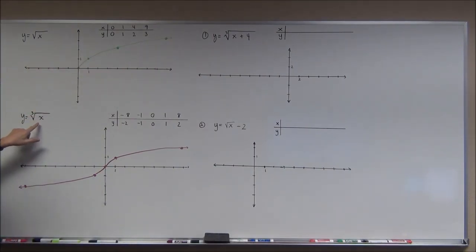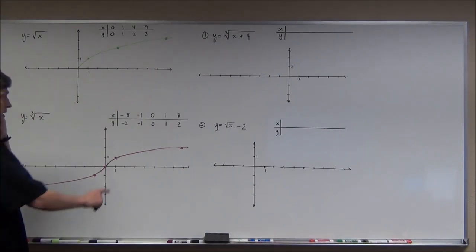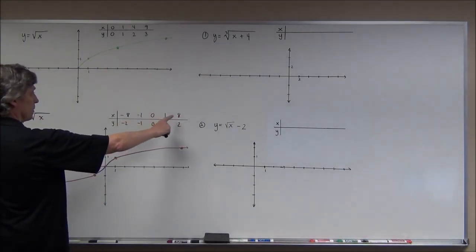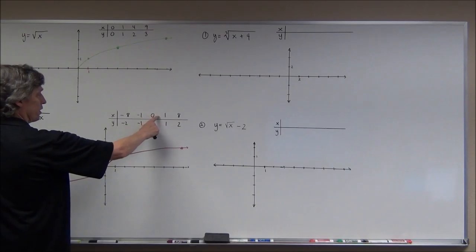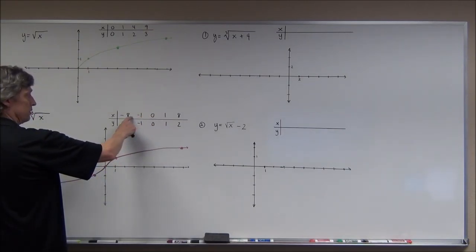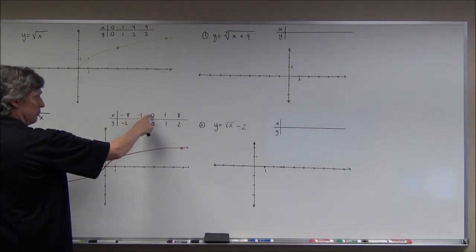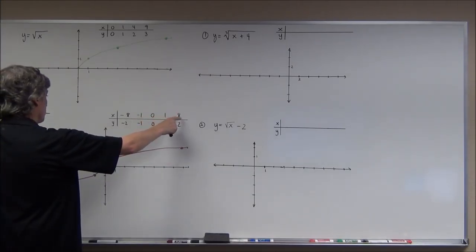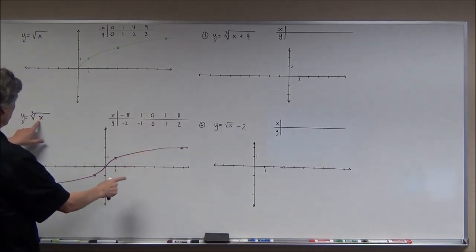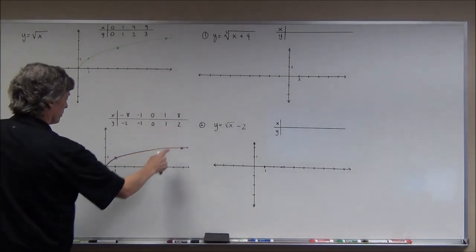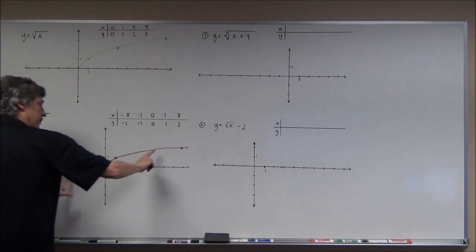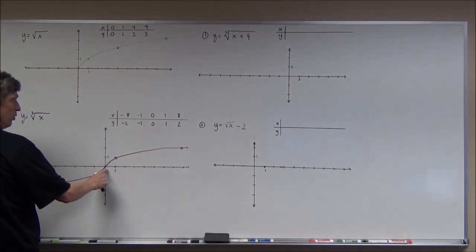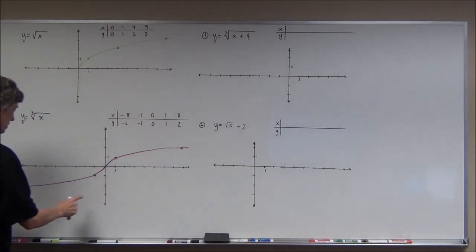The parent graph for the cube root function looks a little different because you can plug negative numbers in for x. I picked negative numbers and positive numbers that are all perfect cubes: negative 8, negative 1, 0, 1, and 8. When I plug these in and take the cube root I get the corresponding values, and the graph goes on forever in both directions, right through the origin.